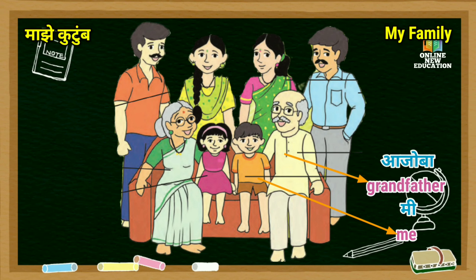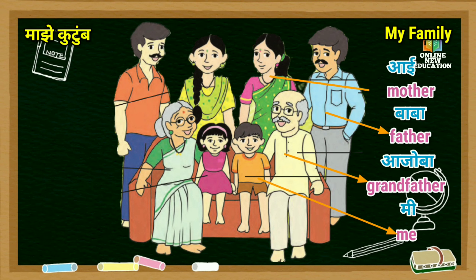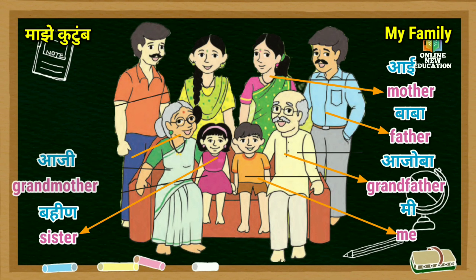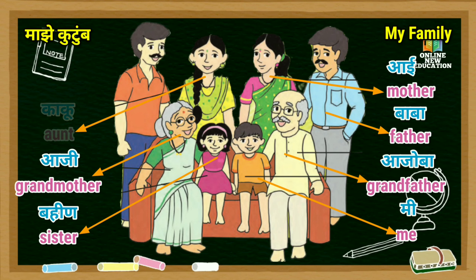आजोबा - Grandfather. बाबा - Father. आई - Mother. बहीण - Sister. आजी - Grandmother. काकू - Aunt. काका - Uncle.